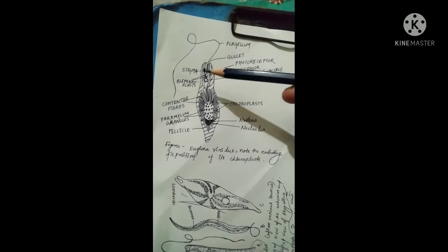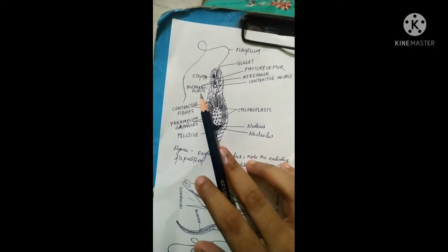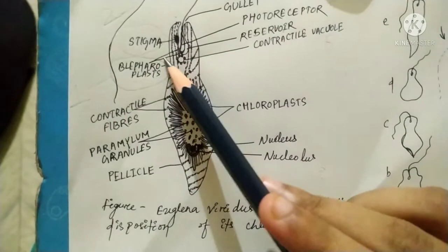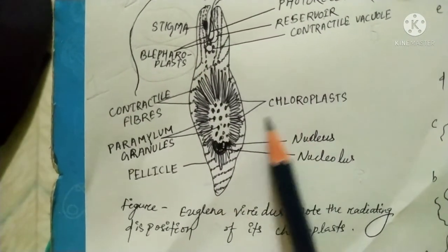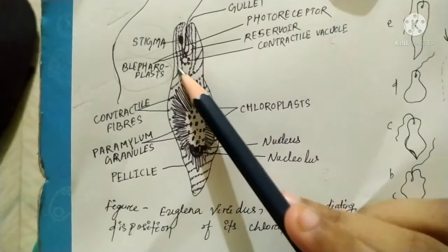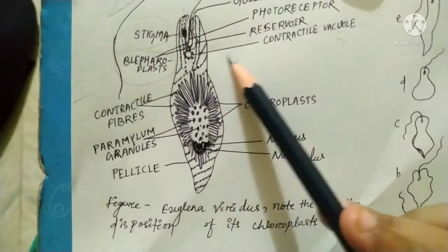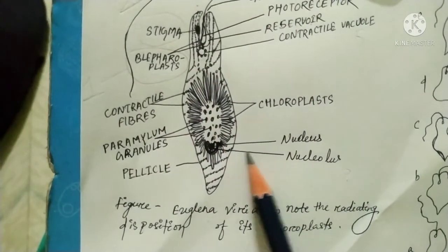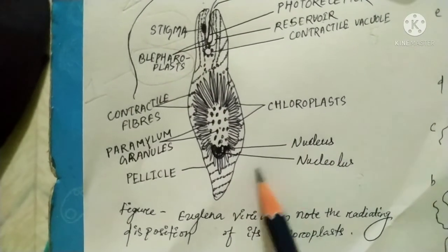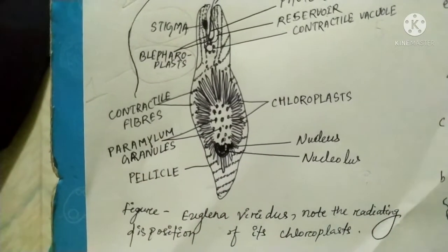The parts of Euglena viridis showing the radiating disposition of its chloroplasts include: blepharoplasts, stigma, flagellum, gullet, photoreceptor, reservoir, contractile vacuole, nucleolus within nucleus, chloroplasts, contractile fibers, paramylum granules, and pellicle.